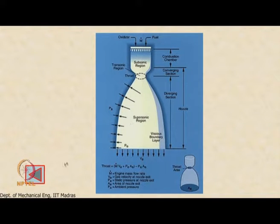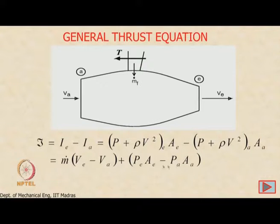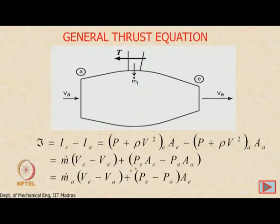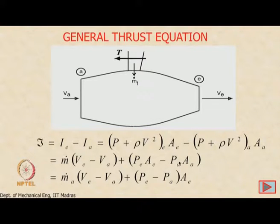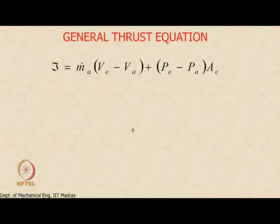Keeping this in mind, the static pressure in the thrust equation must be evaluated with reference to the local ambient pressure Pa. So Pe is evaluated with respect to Pa, giving Pe minus Pa. Since Pa minus Pa equals zero, that term vanishes. This is where we left the last lecture — this is our thrust equation.